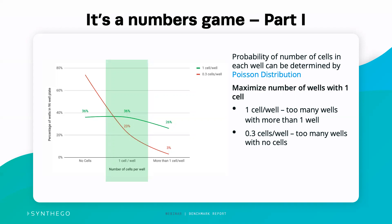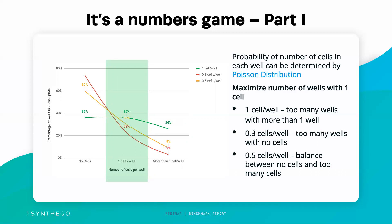On the opposite end, if we seed as low as 0.3 cells per well, about 70% of wells will have no cells, 23% will have one cell per well, but we've minimized wells with more than one cell to 3%. That's great, but we have a lot of empty wells. So where is the Goldilocks? We recommend 0.5 cells per well as a seeding density, because this allows about 30% of wells to have one cell per well, reduces more than one cell per well to about 9%, and gives us that nice balance between too few clones overall and too many polyclonal wells.